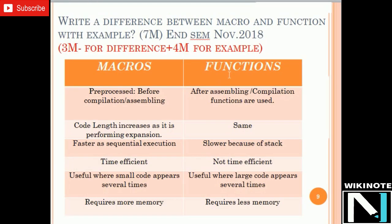The question is: write a difference between macro and function with example. This question was asked in the end-semester exam of November 2018, for 7 marks. The marking scheme is 3 marks for the difference and 4 marks for the example — 2 marks for the macro example and 2 marks for the function example.